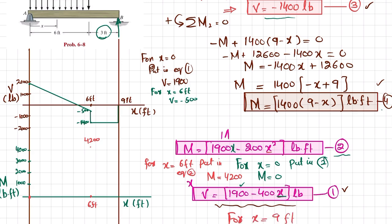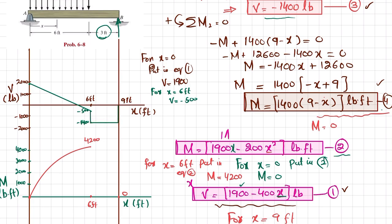In the first region, the shear force is a first-degree line so the bending moment is second degree, curving upward from zero to 4200 with decreasing slope. In the second region, the shear force is constant (zero degree), so the bending moment is a first-degree line decreasing from 4200 back to zero. This completes the bending moment diagram.